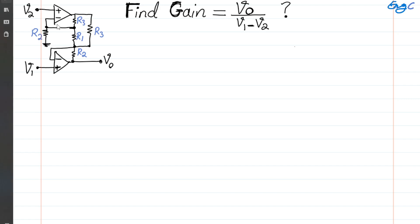A two op-amp difference amplifier is shown here in which Vout is a function of the difference or delta between the two input voltages. We want to find the gain. Assuming that the two op-amps are properly biased — meaning the positive and negative supply for each op-amp are properly set — the two op-amps are in negative feedback mode, not saturated, and ideal, so the virtual short between the two terminals is valid.